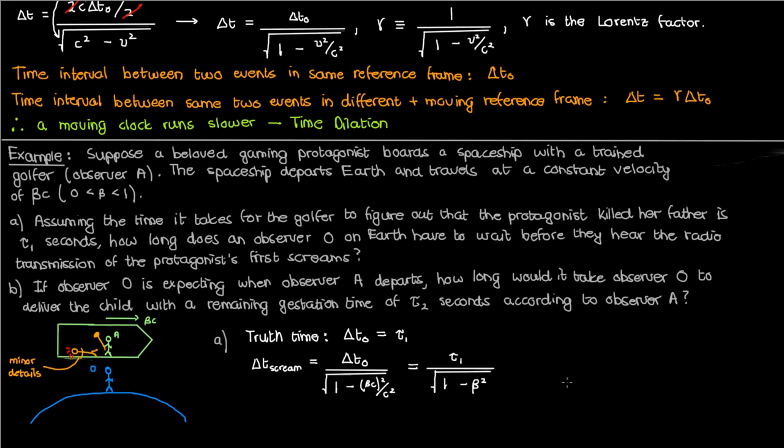This is the time for the first protagonist screams to be heard as measured by observer O. Notice that this time interval is larger than tau_1 — the time interval for the moving observer A to start golfing, as measured by an observer on Earth, is dilated compared to the proper time interval. This is the entire idea of time dilation: to someone on Earth, the moving clock of observer A runs slower.